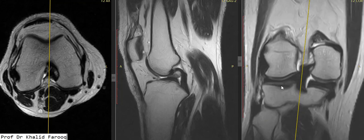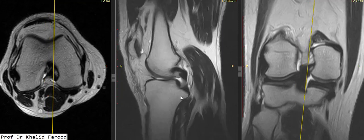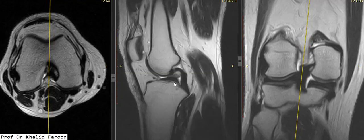This is coronal T2 weighted sequence showing medial and lateral menisci, PCL, intercondylar notch, medial and lateral tibial plateau, tibial spine, and upper end of the fibula. Here we see PCL with mild buckling, while we cannot see the ACL in its normal position.